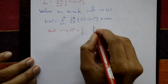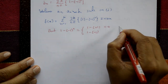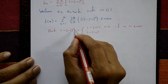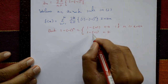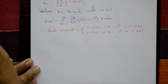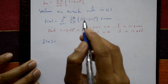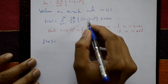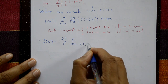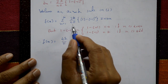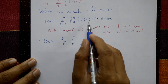Now, 1 minus (minus 1)ⁿ: when n is even (2, 4, 6, ...) this becomes 1 minus 1 equals 0. When n is odd (1, 3, 5, ...) this becomes 1 minus (minus 1) equals 2. So for even n the term is 0, and for odd n we get a factor of 2. Therefore f(x) equals 4k/π times summation over odd n (1, 3, 5, 7, ...) of (1/n) sin(nx).